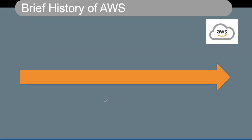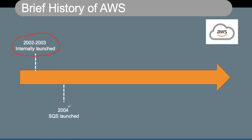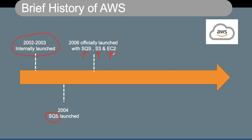AWS was internally launched at Amazon in 2002-2003. However, the first service launched was SQS, or Simple Queuing Service, in 2004. In 2006, they officially launched AWS with services like SQS, S3, and EC2. SQS is Simple Queuing Service, S3 is Simple Storage Service, and EC2 is Elastic Compute Cloud.